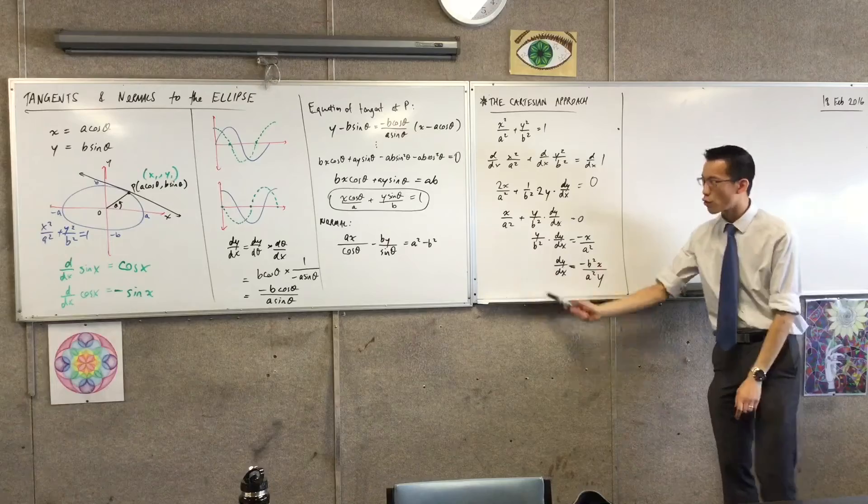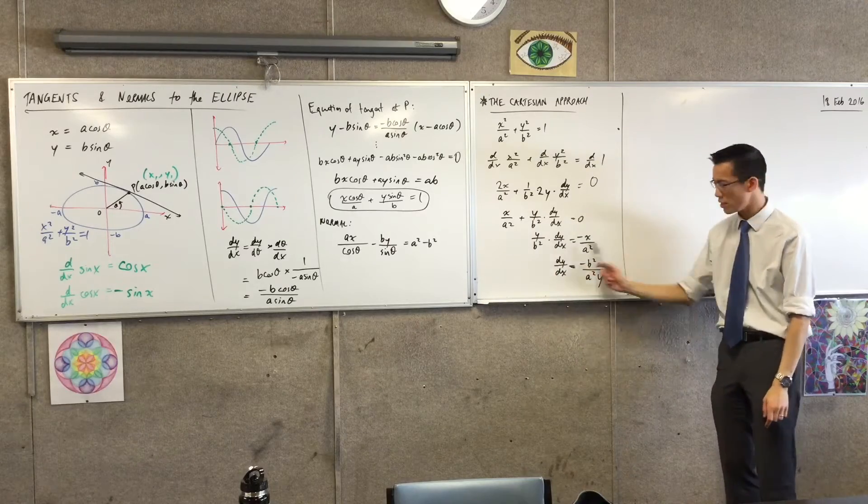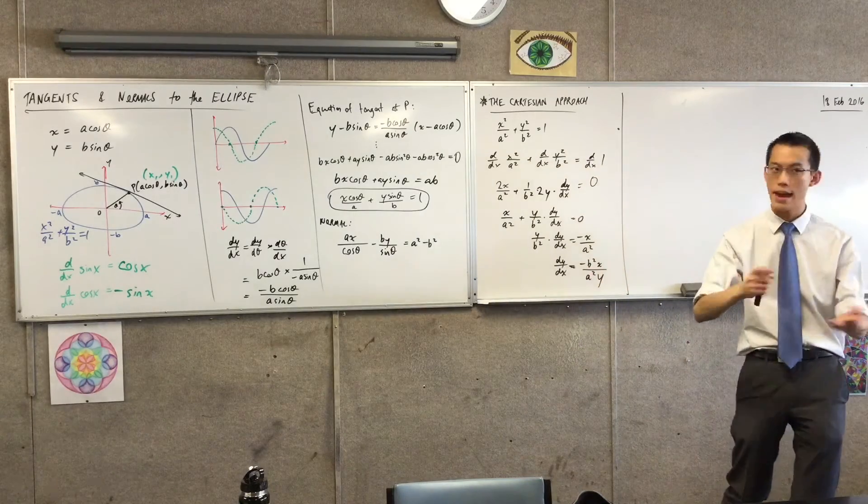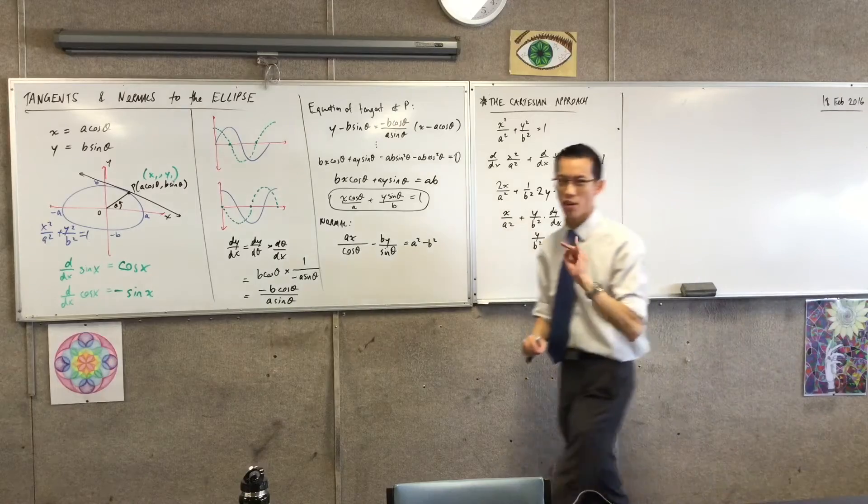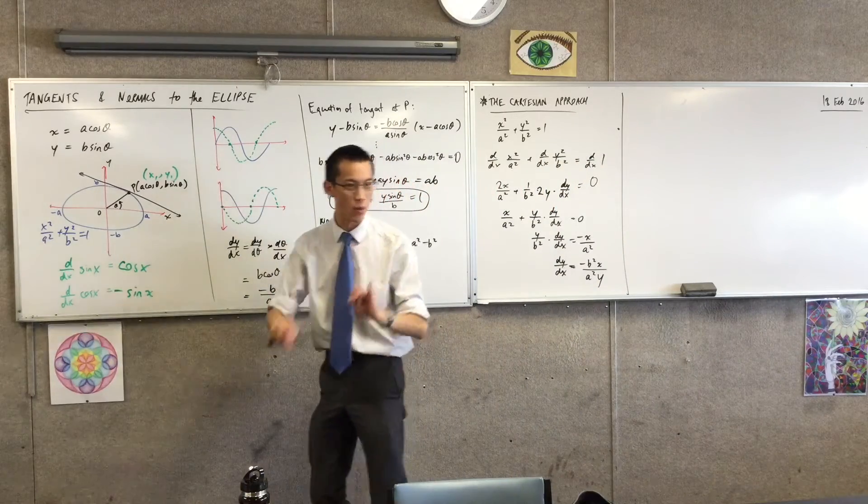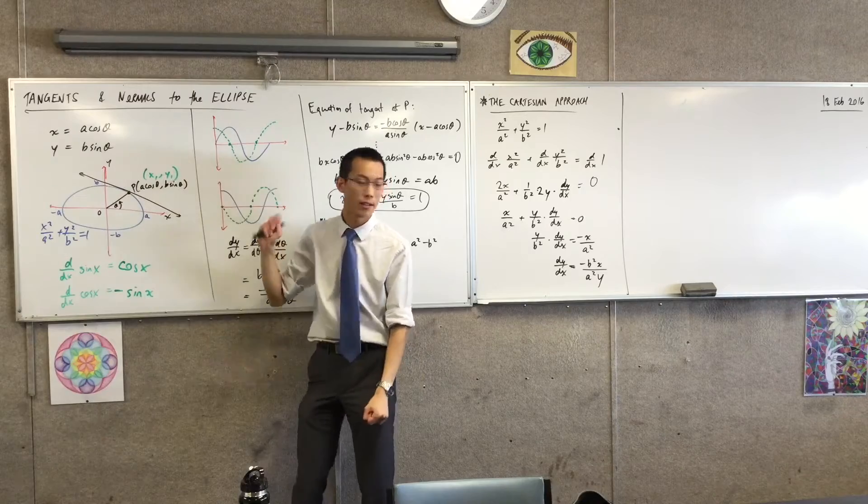Now, keep in mind, this is a gradient function, right? So this gives me the gradient anywhere for any x and any y. But I don't want any x or any y. I want that x and that y.